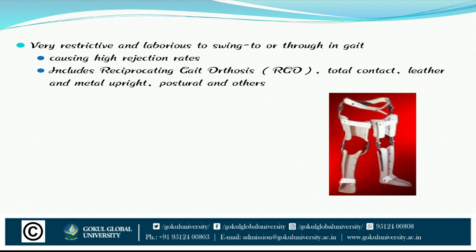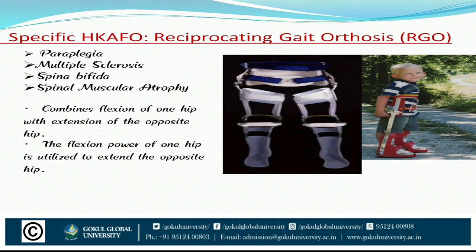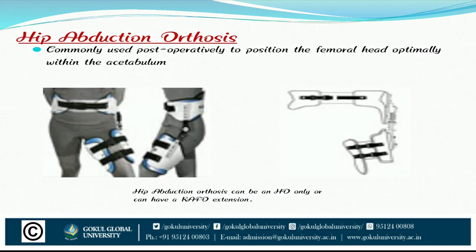HKFO types include: reciprocating gait orthosis, total contact leather and metal uprights, and postural and other specific HKFOs. Reciprocating gait orthosis is used in paraplegia, multiple sclerosis, spina bifida, and spinal muscular atrophy. It combines flexion of one hip with extension of the opposite hip — the flexion power of one hip is utilized to extend the opposite.